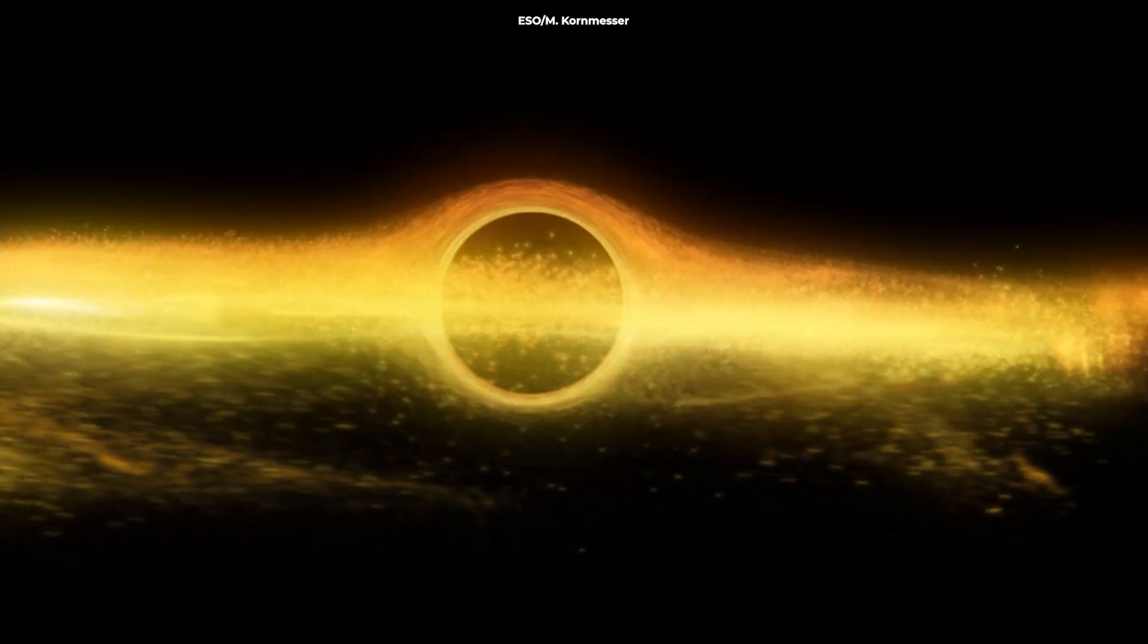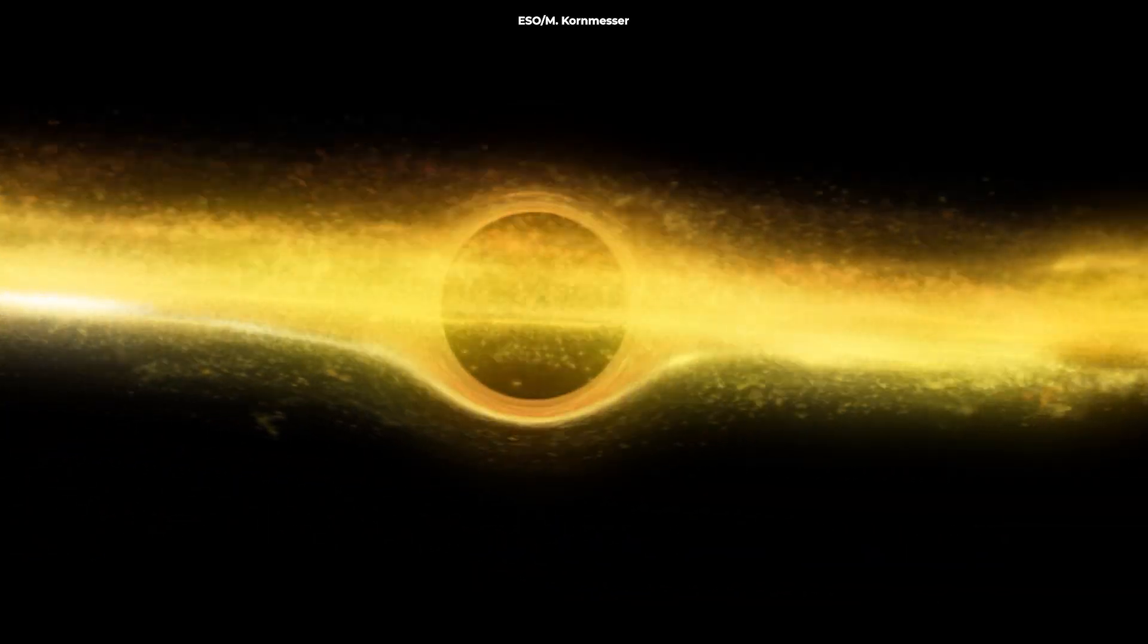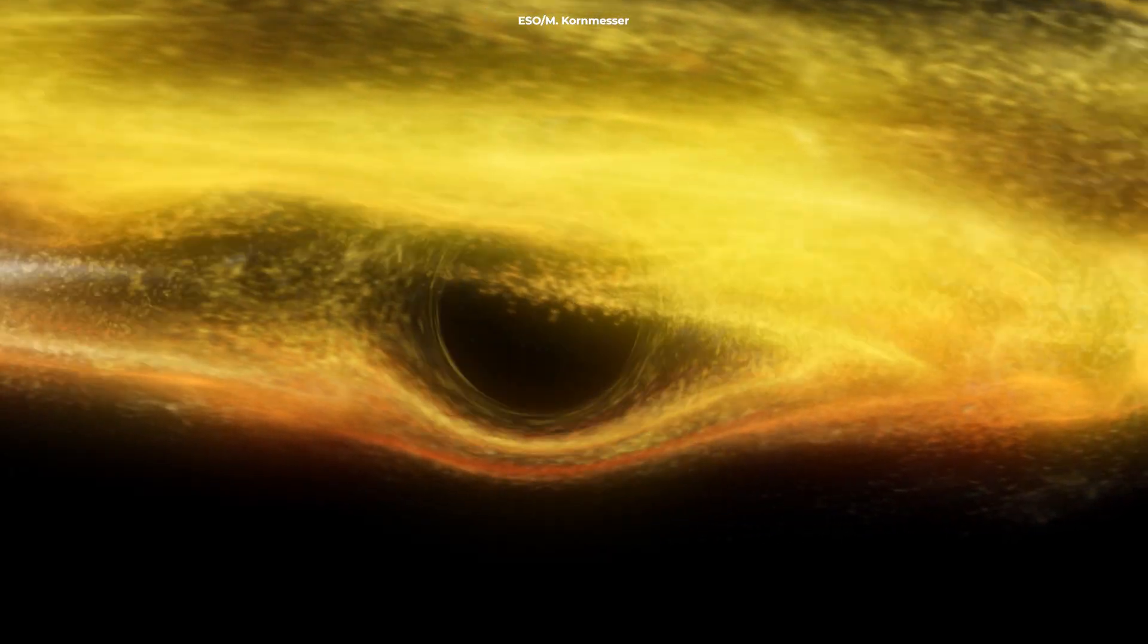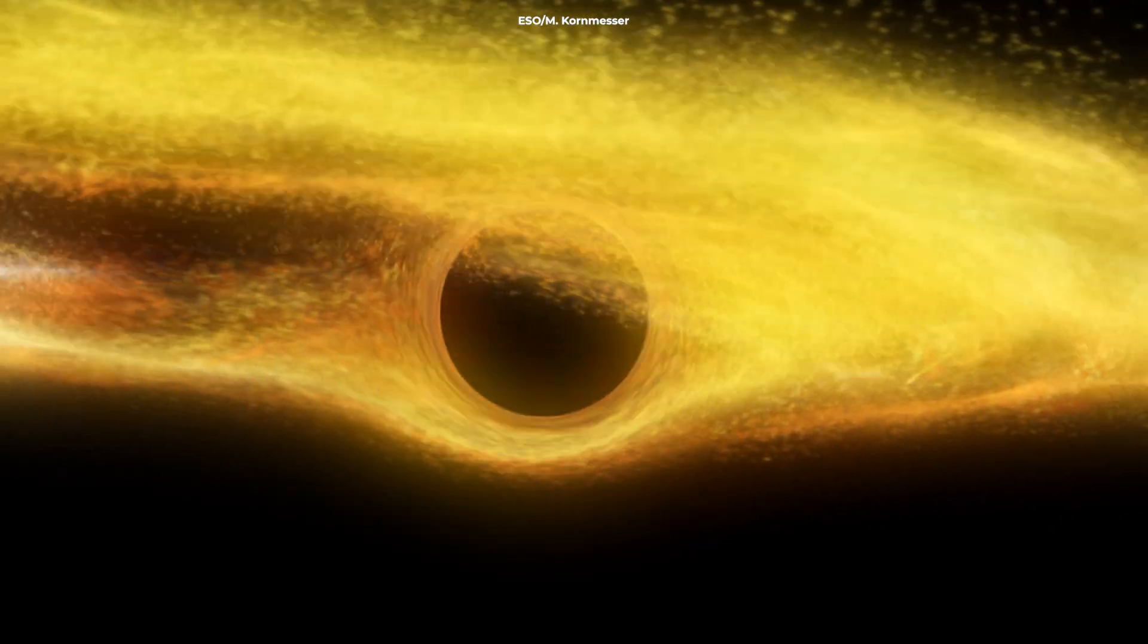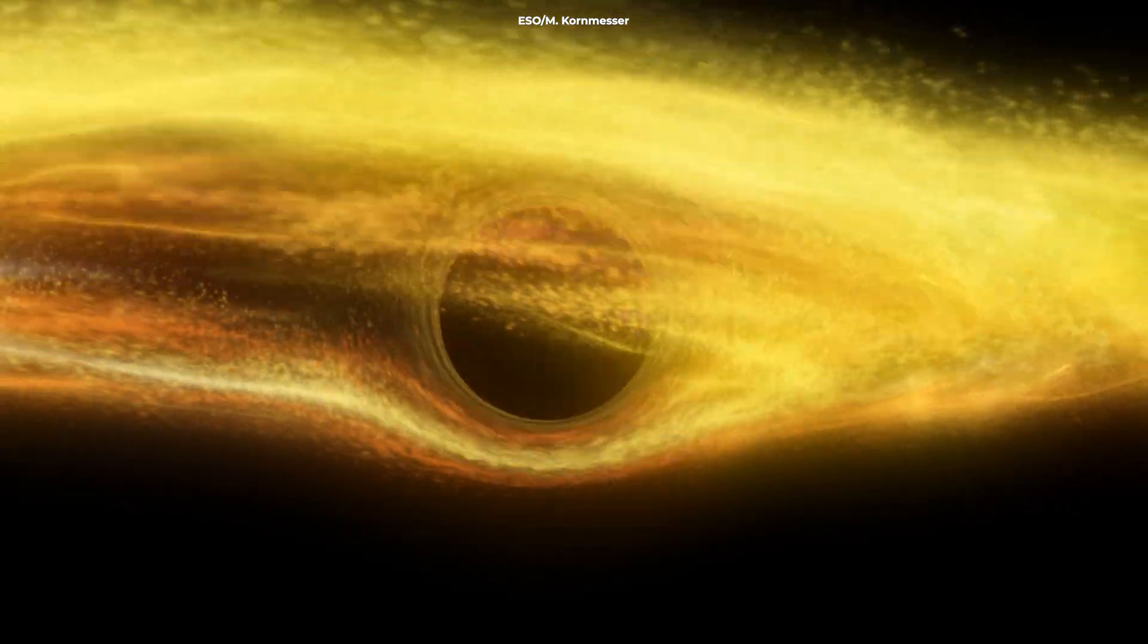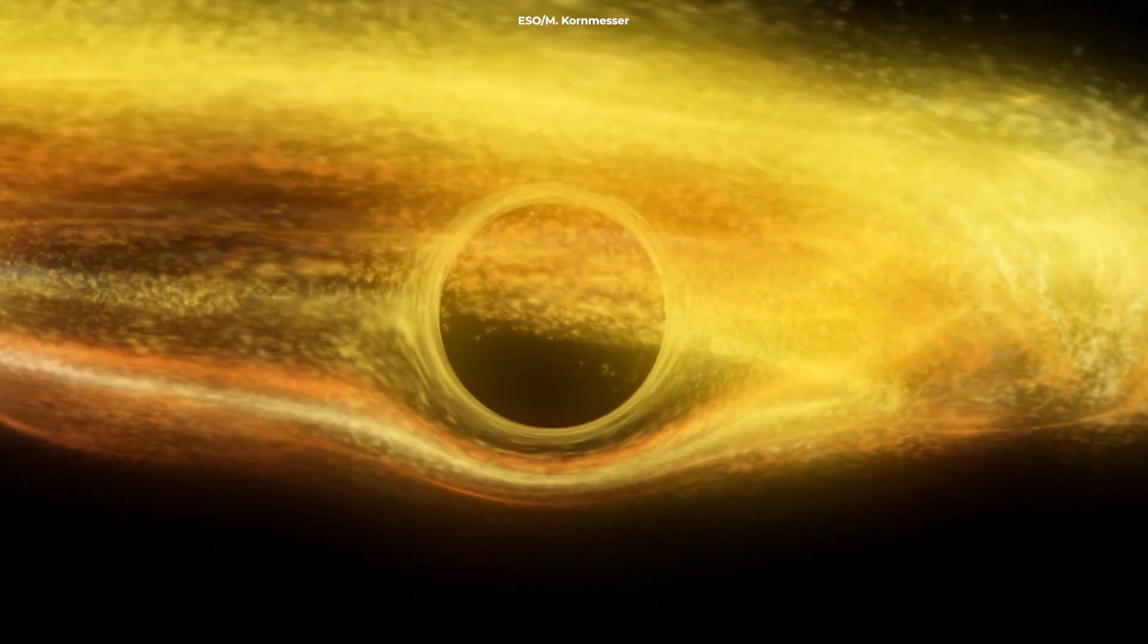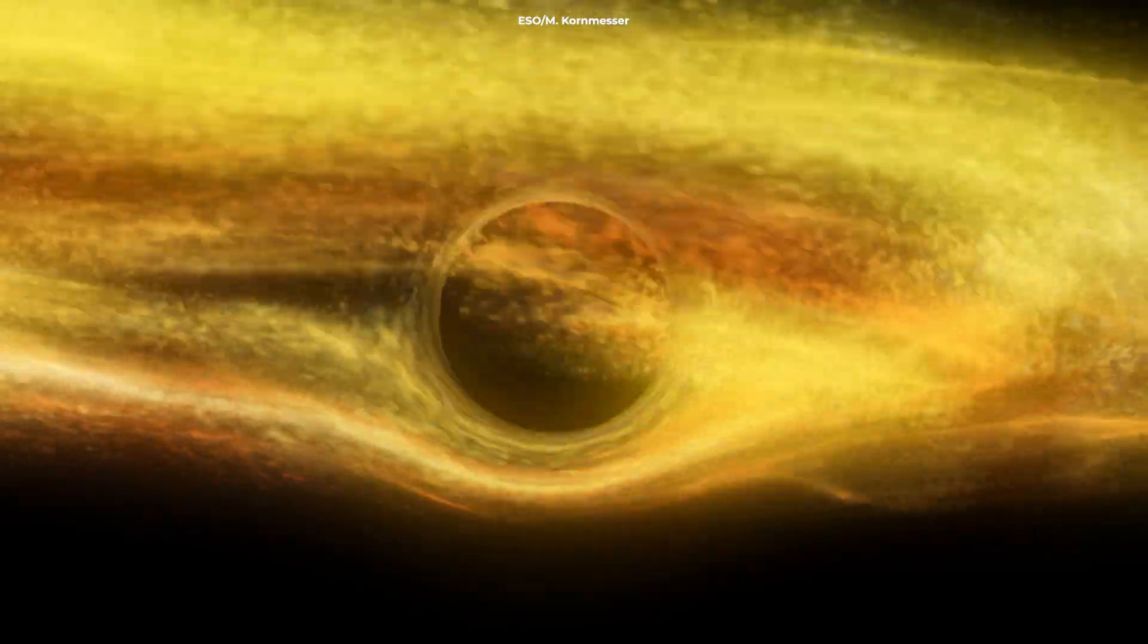It's like a supermassive bowling ball that creates a huge, deep dent in the fabric of spacetime. This dent is so extreme that it stretches time itself. The deeper the dent, the slower time moves for anything caught in it. That's why time slows down so dramatically near a black hole.